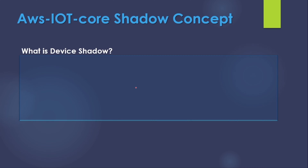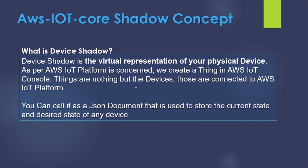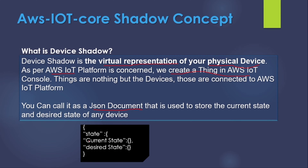What is a device shadow? A device shadow is a virtual representation of any physical device. This physical device can be anything — a temperature sensor, a mobile, or a light bulb. Going by the AWS definition, we create a thing in the AWS console and those things are the devices connected to the IoT platform. Simplified further, the device shadow is a JSON document used to store the current state or desired state of a device.